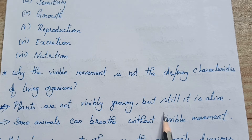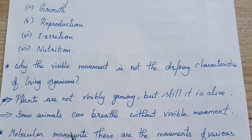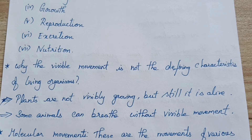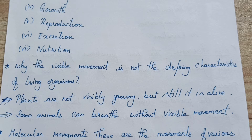Plants are not visibly growing, but still they are alive. Some animals can breathe without any visible movement. We people breathe and you can see our movement, but some animals will not show this movement while breathing — and still they are alive. So we will not say that visible movement alone is a defining characteristic of a living organism, because even if it is not visible, some organisms are still alive.